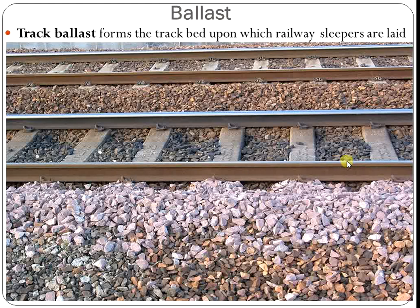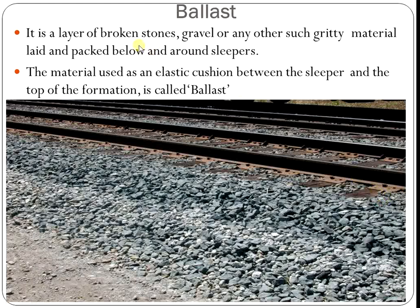The first point is the definition of ballast. The track ballast forms the track bed upon which railway slippers are laid — that is, the slippers are laid on the ballast. It is a layer of broken stones, gravel, or any other such granular material laid and packed below and around slippers. The material used as an elastic cushion between the slipper and the top formation is called ballast.